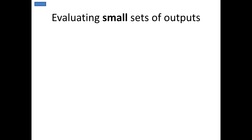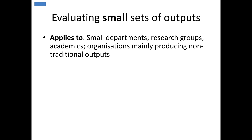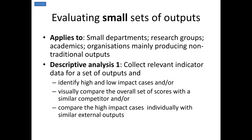The second scale: evaluating small sets of outputs. This might apply to a small department, a research group, the work of individual academics, or organisations producing small numbers of non-traditional outputs. The descriptive analysis involves collecting indicator data for all outputs, identifying high and low impact cases, visually comparing the overall set of scores with a competitor, and comparing high impact cases individually with similar external outputs. These are visual rather than statistical comparisons — much weaker, but can point to interesting avenues for analysis.